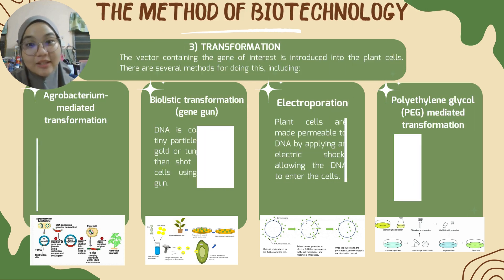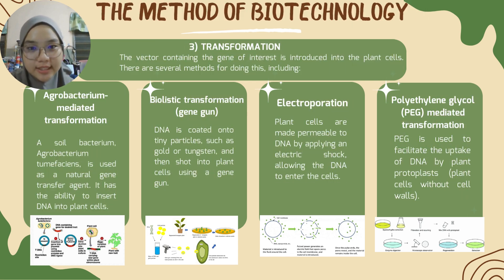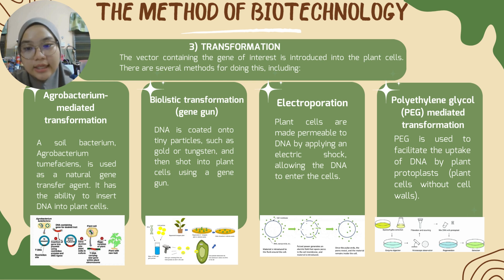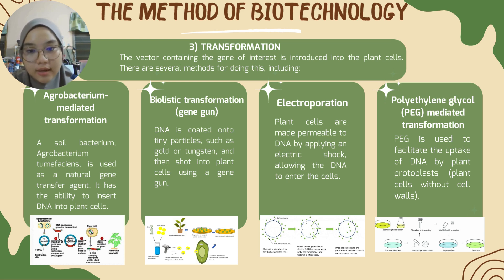Third, transformation. The vector containing the gene of interest is introduced into the plant cell. There are several methods for doing this, including agrobacterium-mediated transformation, where a soil bacterium is used as a natural gene transfer agent with the ability to insert DNA into plant cells. Second, biolistic transmission, where DNA is coated onto tiny particles such as gold or tungsten and then shot into plant cells using a gene gun.